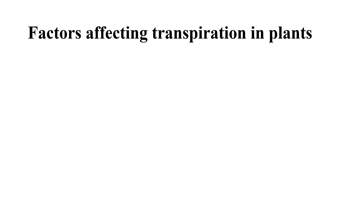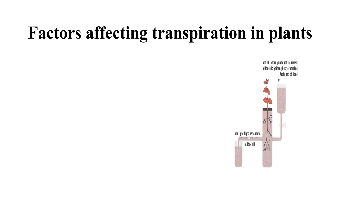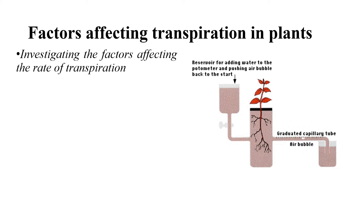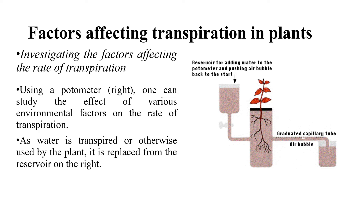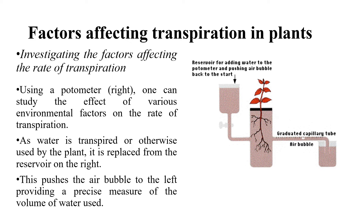Factors affecting transpiration in plants: Investigating the factors affecting the rate of transpiration using a potometer, one can study the effect of various environmental factors on the rate of transpiration. As water is transpired or otherwise used by the plant, it is replaced from the reservoir on the right. This pushes the air bubble to the left, providing a precise measure of the volume of water used.